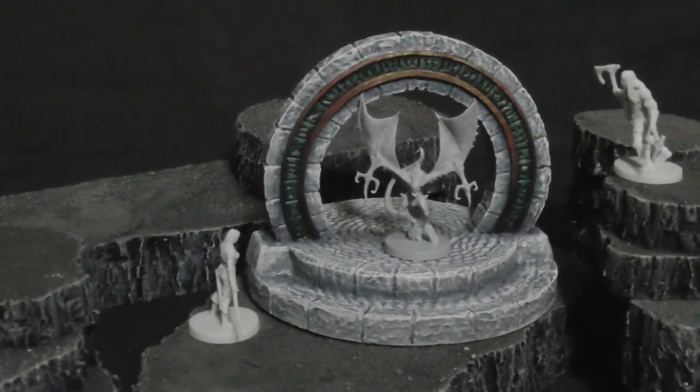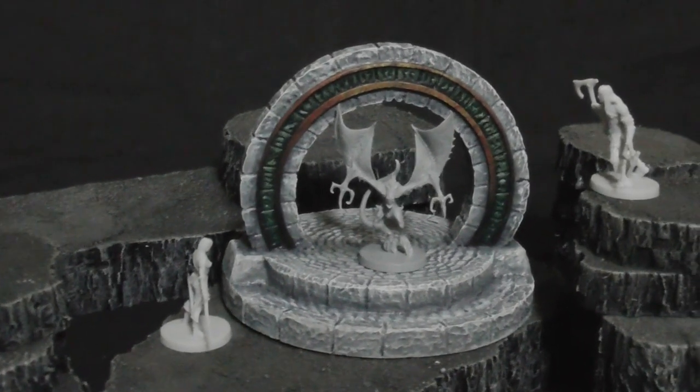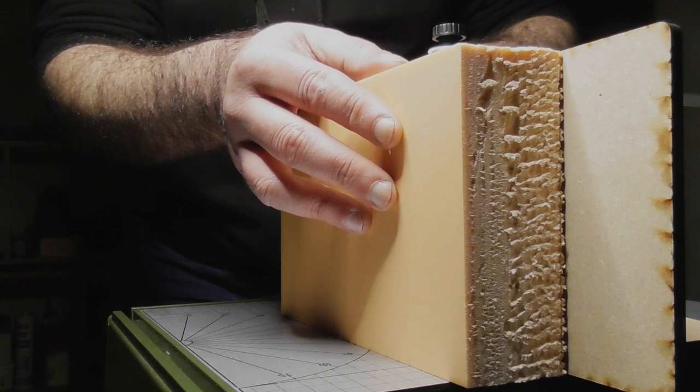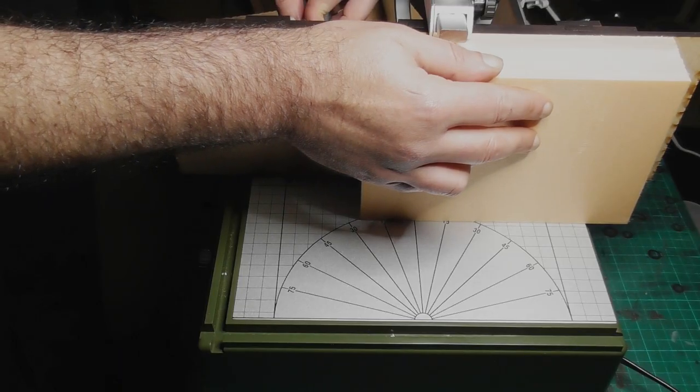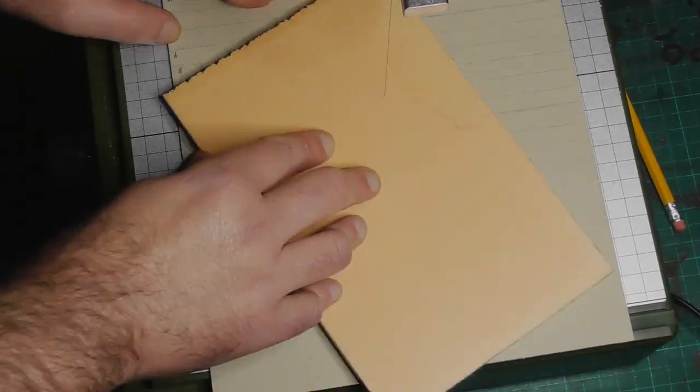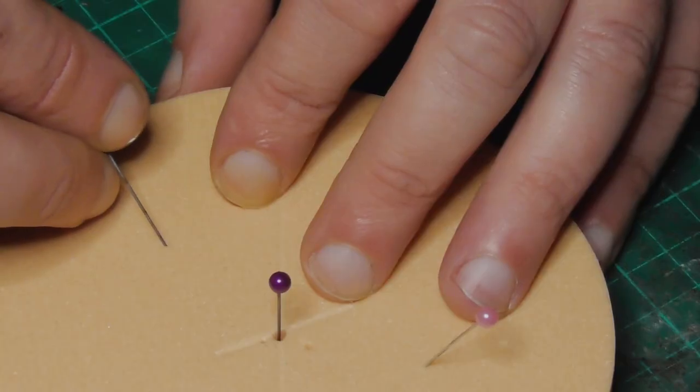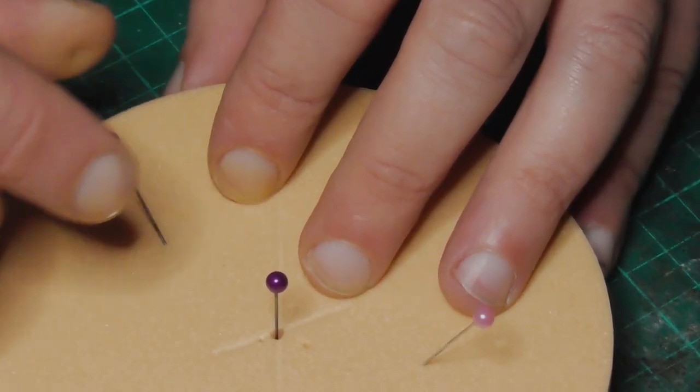The whole thing is made of XPS insulation foam. I cut two sheets 10mm thick for the base and one sheet 12mm thick for the arch. To make the base I cut two circles using my homemade circle jig and glued them together trying to keep them centered.